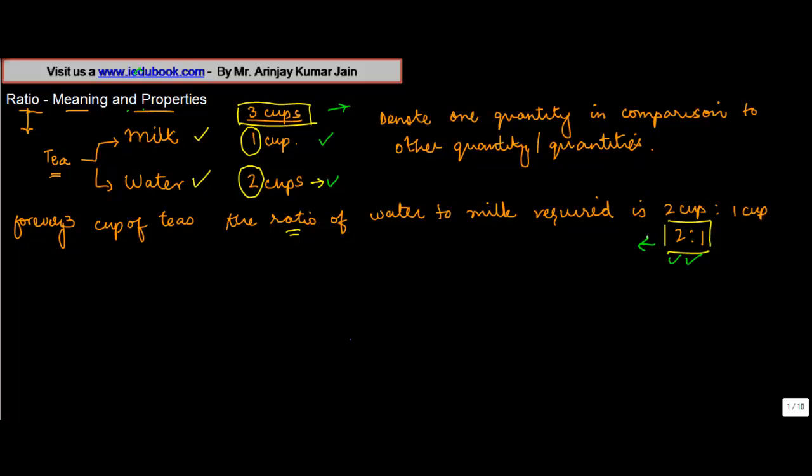Now this ratio which is two is to one can also be written as, if you multiply both of them by two you will get four is to two, or again if you multiply them by three you will get twelve is to six. But in both the cases the ratio remains the same, meaning thereby that if you divide one of them from the other ultimately you are going to reach at two is to one.